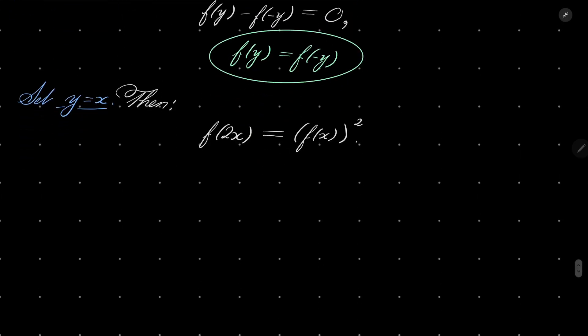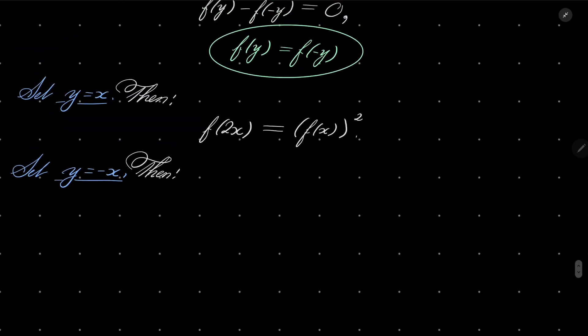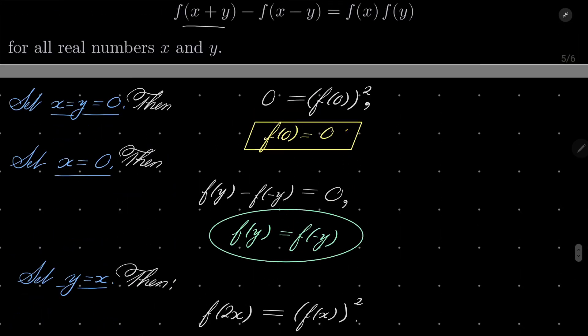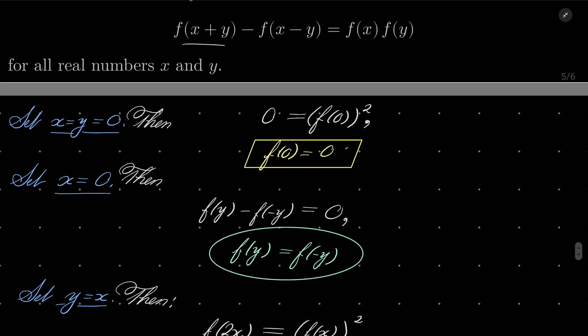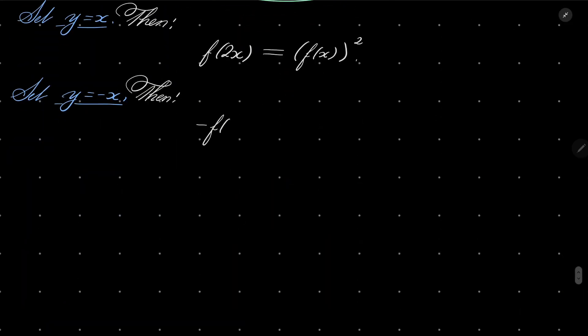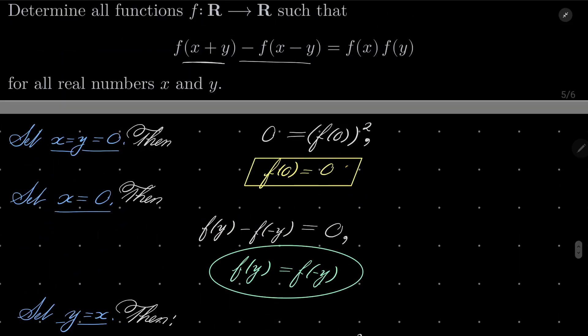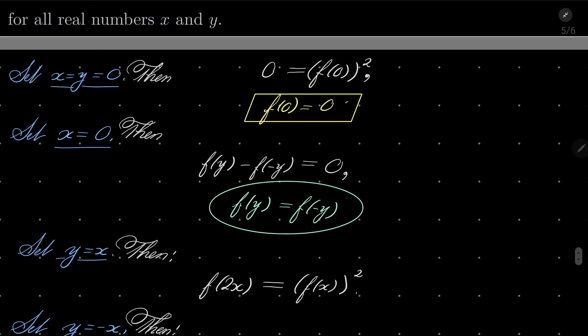Alright, and now let's finally set y to be minus x. And what then? Well, then, let's take a look. If y equals minus x, we have the following: f(0) - f(2x) = f(x)f(-x).